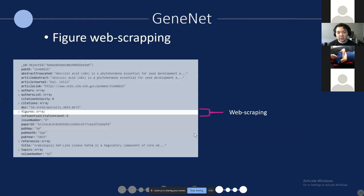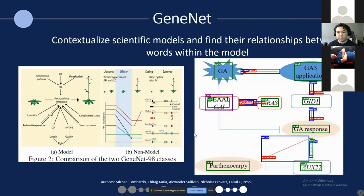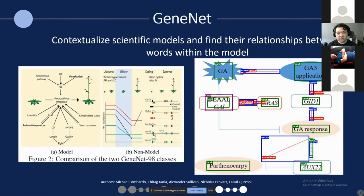Going back to figure web scraping — we're working with a team at Ontario Tech University (UOIT), and they are working on a visual image recognition machine learning algorithm called GNET, which contextualizes scientific models and finds relationships between words and objects within figures. It first determines whether a given figure is a model or not. If it is a model, it uses visual image recognition to determine the context and relationships between text and arrows or objects within an image — allowing it to understand, for example, that GID1 is related to other gene products such as GA3 application and GA response.